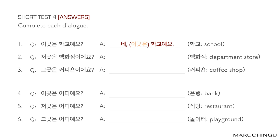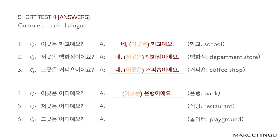1번: 이곳은 학교예요? — 네, 학교예요. 2번: 저곳은 백화점이에요? — 네, 백화점이에요. 3번: 그곳은 커피숍이에요? — 네, 커피숍이에요. 4번: 이곳은 어디예요? — 은행이에요. 5번: 저곳은 어디예요? — 식당이에요. 6번: 그곳은 어디예요? — 놀이터예요.